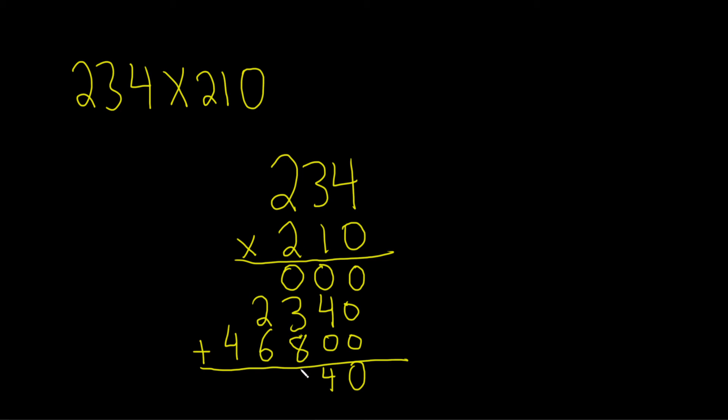You can't write the 11, so what you do is write down the 1s place and carry the 10s place. 1 plus 2 is 3, 3 plus 6 is 9, and then we have a 4, so that'll be 49,140.